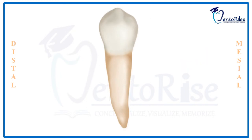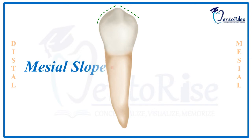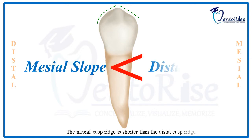There are two slopes that arise from the buccal cusp: the mesial slope and the distal slope. The mesial slope is shorter compared to the distal slope.